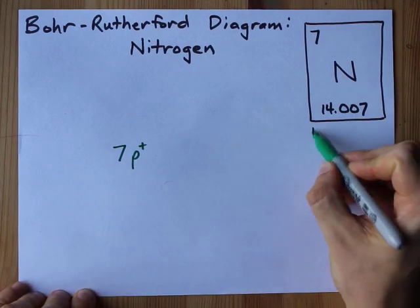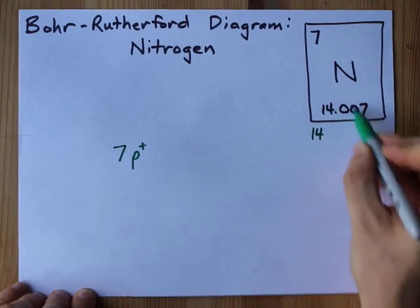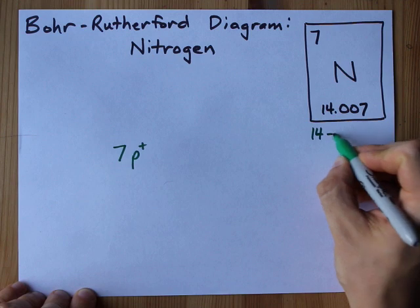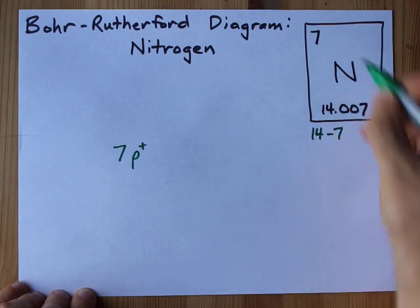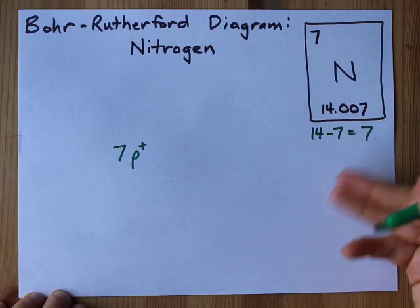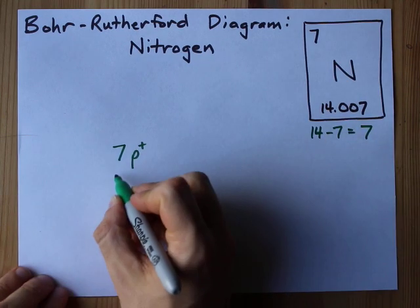And the mass number 14, now I'm rounding this to the nearest whole number. Minus the number of protons, that's 14 minus 7, gives me the number of neutrons. It happens to be seven here but they won't always match like that.